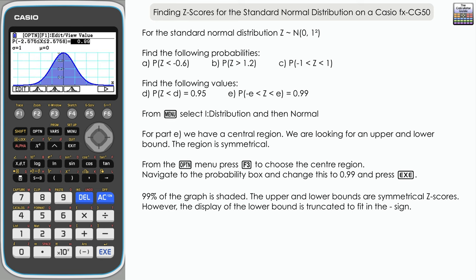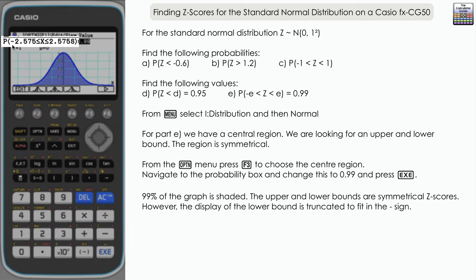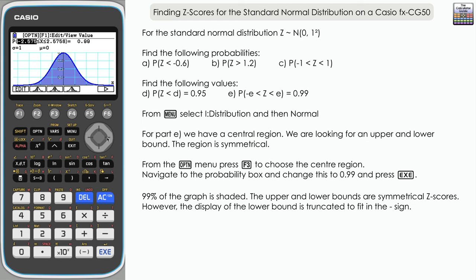We've got the majority of the graph shaded—99% of it—and up at the top here we've got the Z values that we're looking for for part E. So upper bound of 2.5758 and a lower bound of -2.575. I believe that lower bound has been truncated; it is just going to be the negative version of the same value for the upper bound. It's just they probably don't have quite enough space to display it on the calculator.